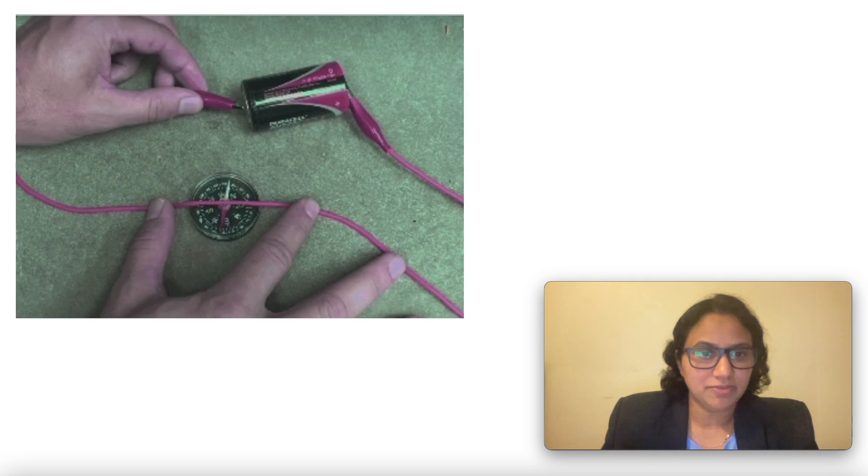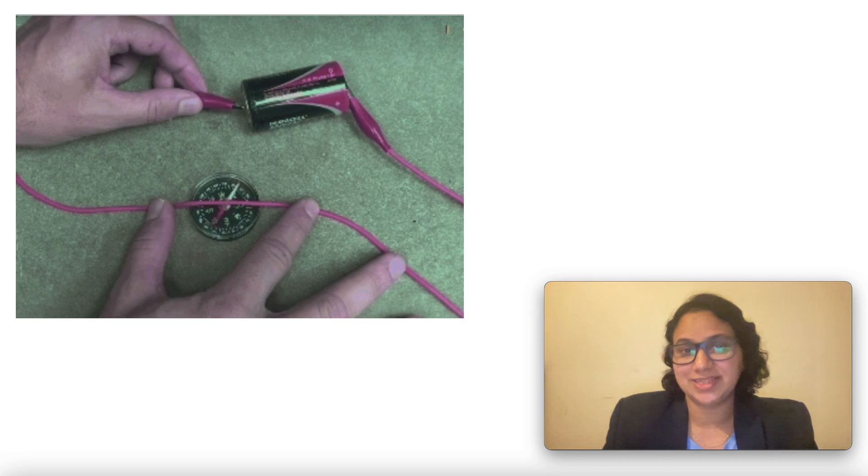When a current flows through a wire, it creates a magnetic field around the wire. We can see that the needle is deflected. It means that electric current through a wire produces a magnetic field around it. This means that electricity and magnetism are linked to each other.